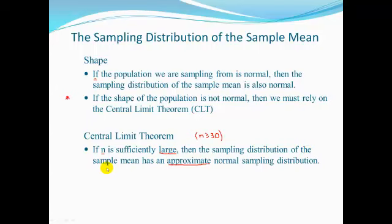As we go further into confidence intervals, we'll be working with means and proportions. While means have a sample size criterion of 30 or more, proportions will use something different. So don't get too married to this sample size criterion — it will change later on, but right now we're concentrating on the sample mean.